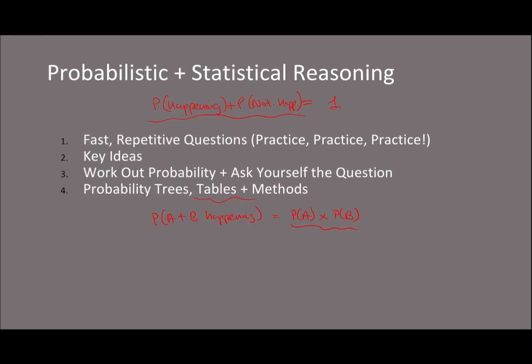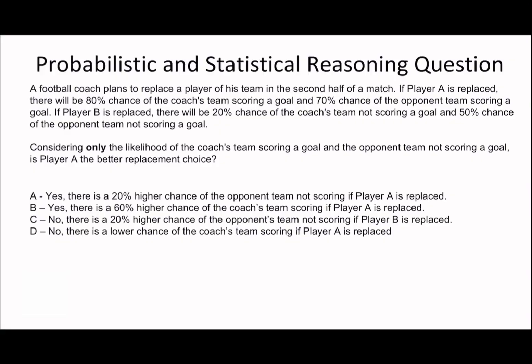So without further ado, I think we should just get straight into it. So this is the style of question that I mean when it says considering only the likelihood of or judging based only on. And then it gives you some variables and it gives you a question. So what I like to do is if you make a table and you need to put exactly as it says here. So the coach's team scoring a goal and the opponent team not scoring. Then you have the two things to consider, which is player A and player B.